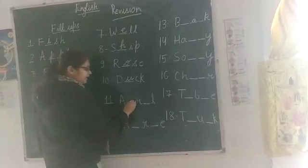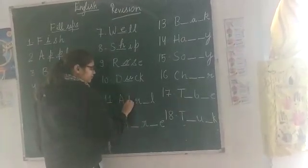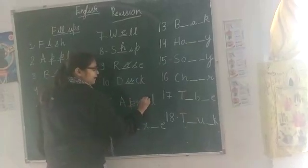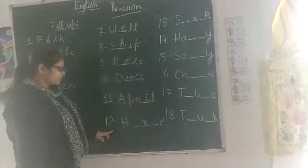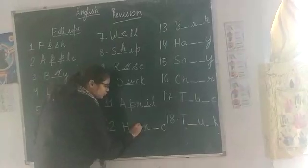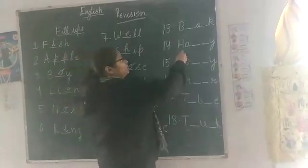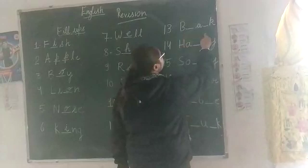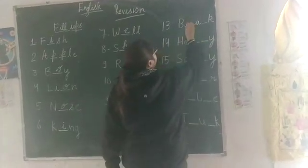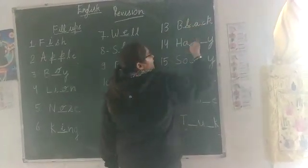Number eleven is april. A-P-R-I-L. April. Number twelve is horse. H-O-R-S-E. Horse. Number thirteen is black. B-L-A-C-K. Black.